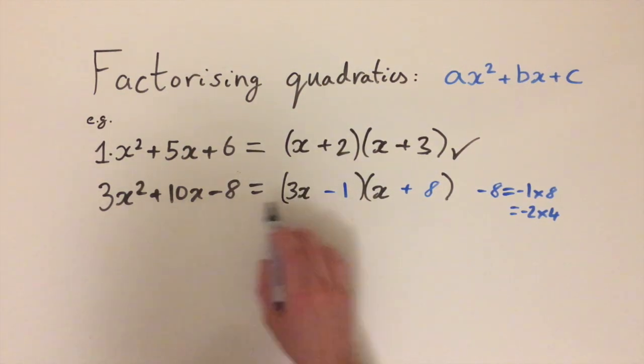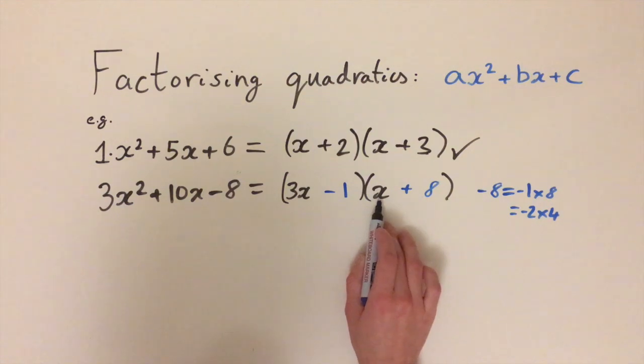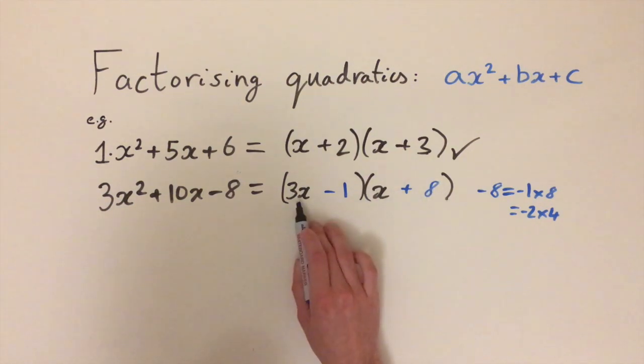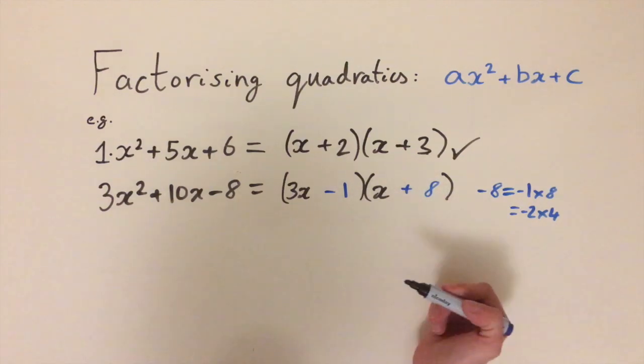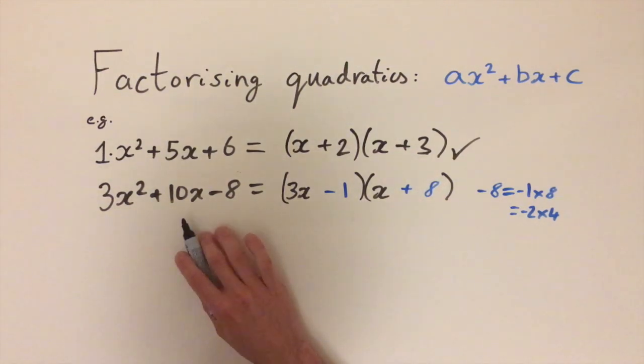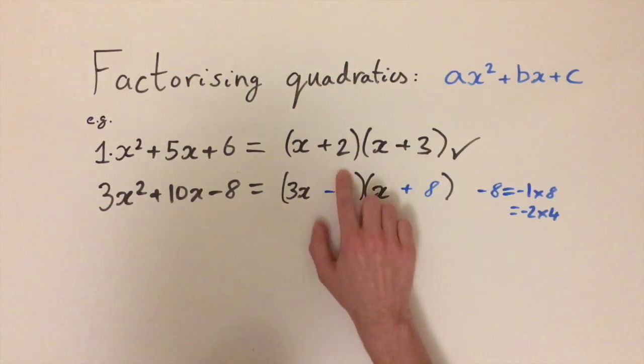So let's just check if we get 10x. We'll have minus 1 times x and 8 times 3, so that's 24 minus 1. That gives us 23x which isn't what we want, we want 10x. So let's try another combination.